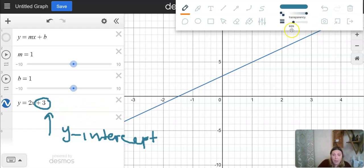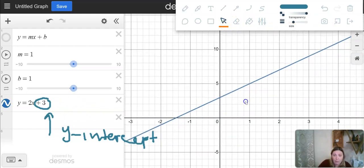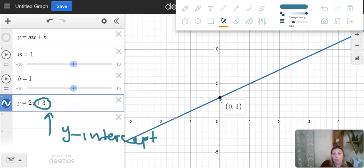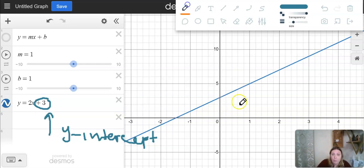So right now over here on my graph, I have a blue graph and it hits the y-axis at this point, zero and three. Now what is zero and three? Well, those are the coordinates of this point, the x value and the y value.